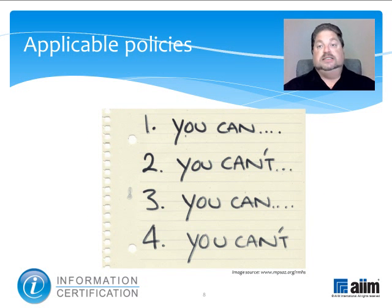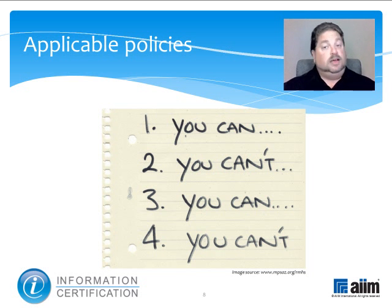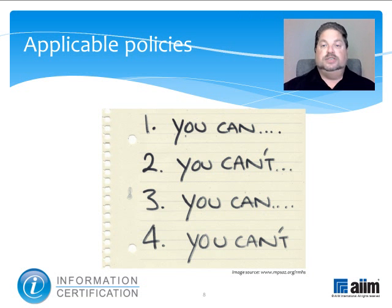Policies are yet another source of insight into how information is or should be architected, because they generally address how that information is supposed to be used. Records managers are prime candidates for research in this regard, because many information policies begin and end with them. Understanding what the rules are makes it more clear when they aren't followed, and it's easier to identify the types of information that may be more prone to misuse and under what circumstances. This in turn enables the embedding of appropriate governance safeguards into any new architecture.